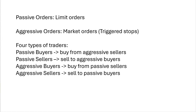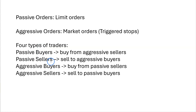You could enter on a limit, you could enter on a stop, you could enter at the market. When a stop order gets triggered, it becomes a market order. So there are two main types: passive orders and aggressive orders. However, there are going to be four types of traders: passive buyers, passive sellers, aggressive buyers, and aggressive sellers. You break passive and aggressive orders down between buyers and sellers.